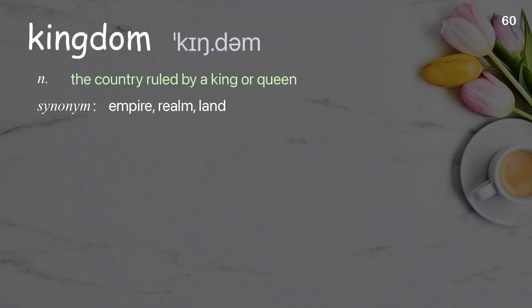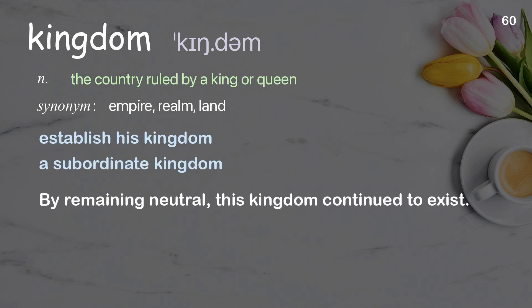Kingdom: The country ruled by a king or queen. Examples: Establish his kingdom. A subordinate kingdom. By remaining neutral, this kingdom continued to exist.